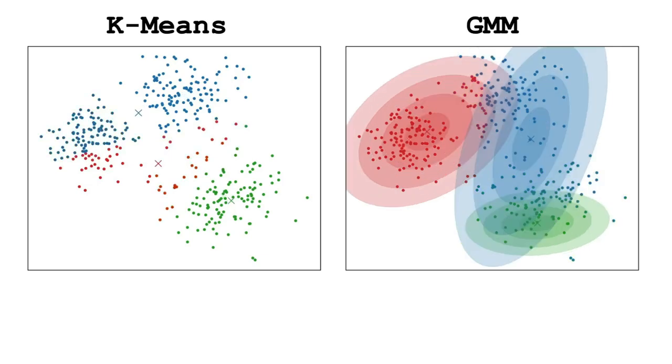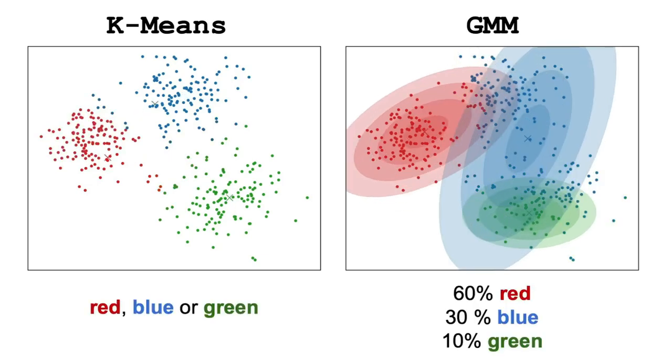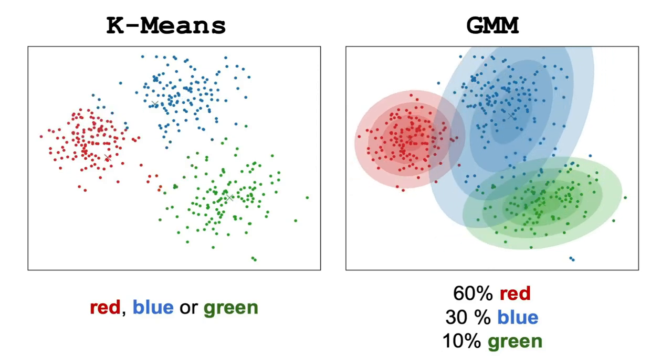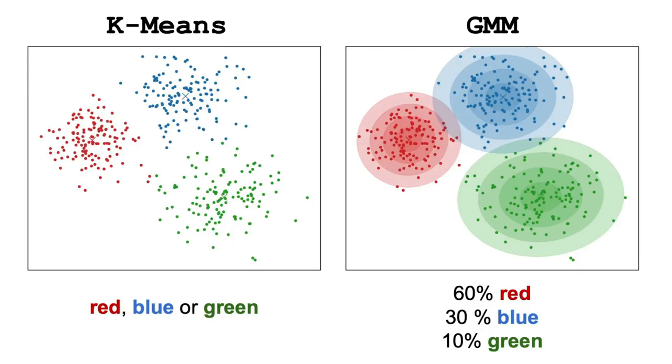So, in simple terms, K-means puts a hard clustering label on each data point whereas GMMs assigns a softer clustering label telling us how probably it's for a data point to belong to a certain cluster.